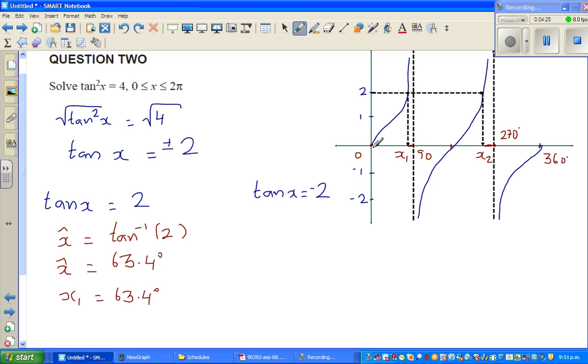So if this is 63 away from 0, there should be 63 away from 360, so I'm making a guess. So x2 would be 360 minus... no, that would not work. It's not on symmetry, sorry.